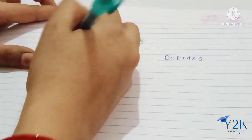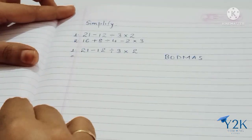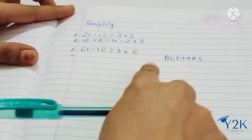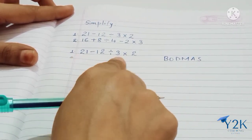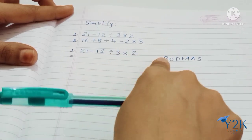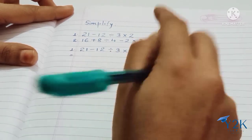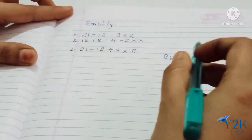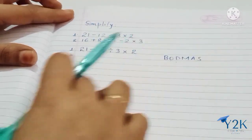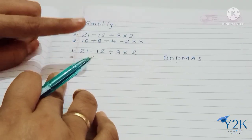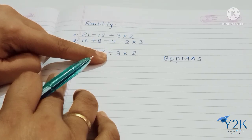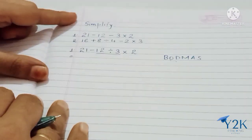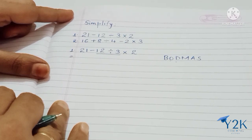While solving this sum, we are going to solve it step by step. We can see there are no brackets given in this sum, so brackets open is not there. Directly division comes, so first we will simplify the division. In step 2 we will simplify the division first.